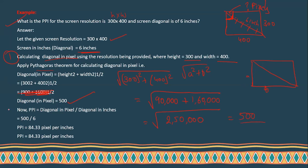Now step two: calculate pixel per inch. The formula is diagonal in pixels divided by diagonal in inches. The diagonal in pixels is 500, and the diagonal in inches given is 6. So 500 divided by 6 equals 84.33 pixels per inch. This means in every inch of the screen, there are 84.33 pixels. If you know the screen resolution — the height and width — and want to calculate how many pixels are present per inch, apply this formula.